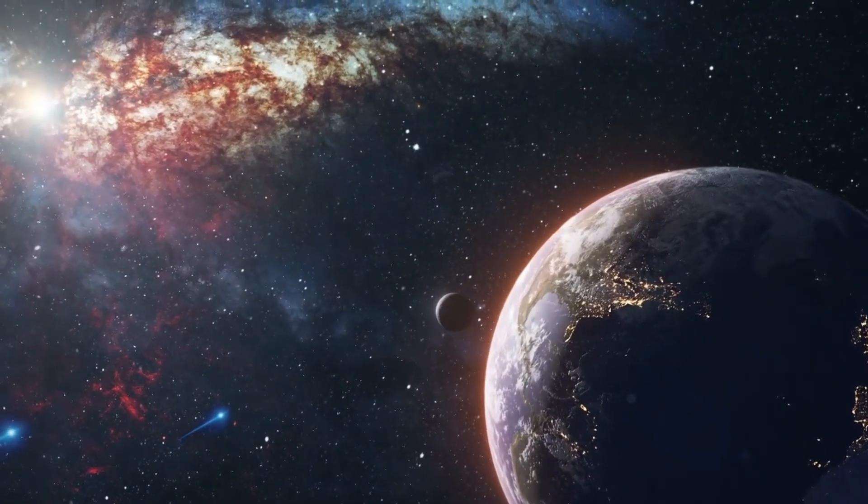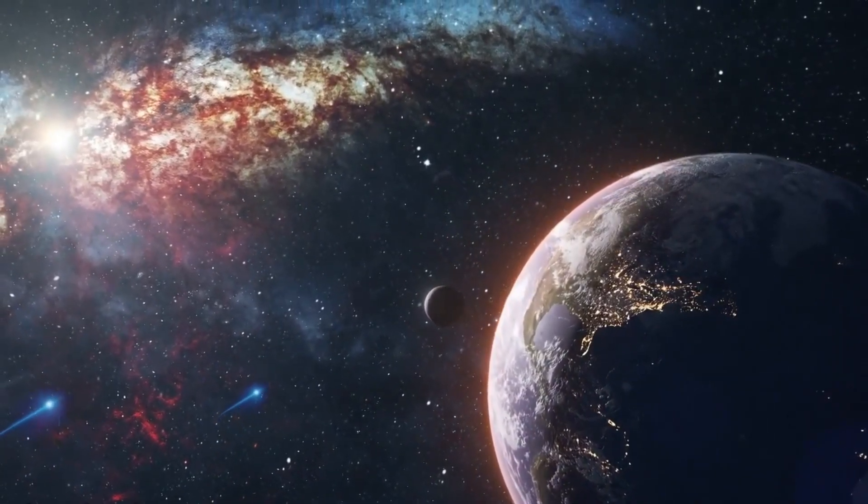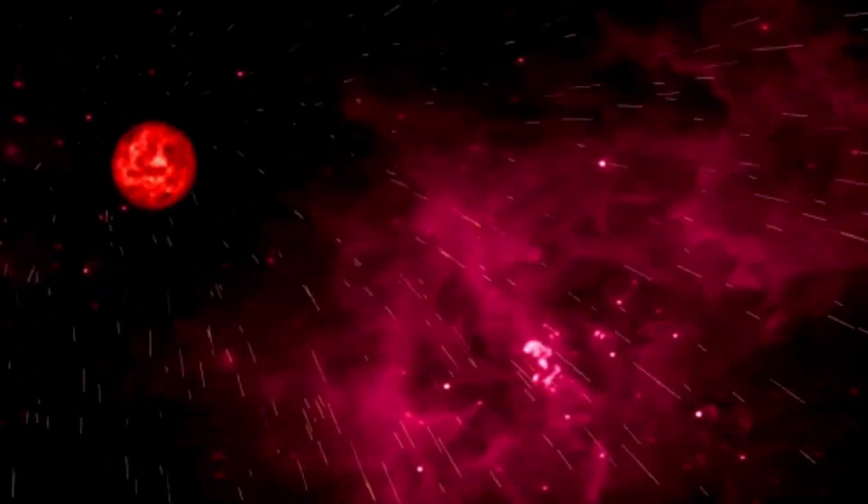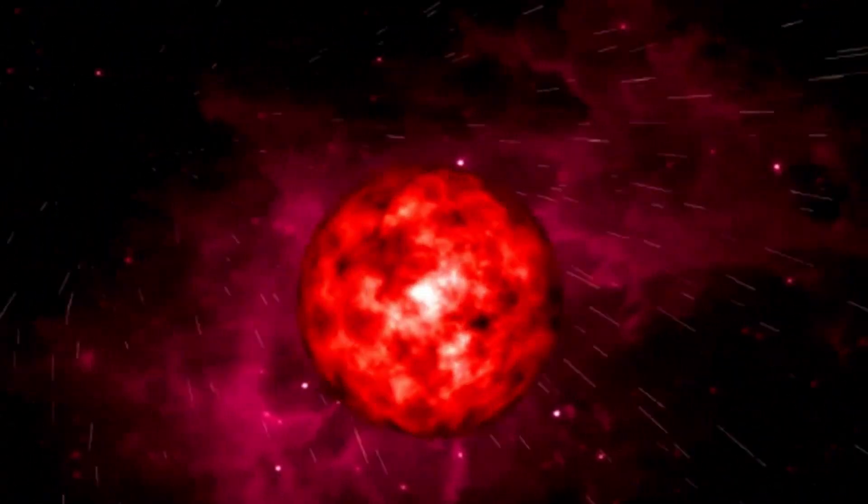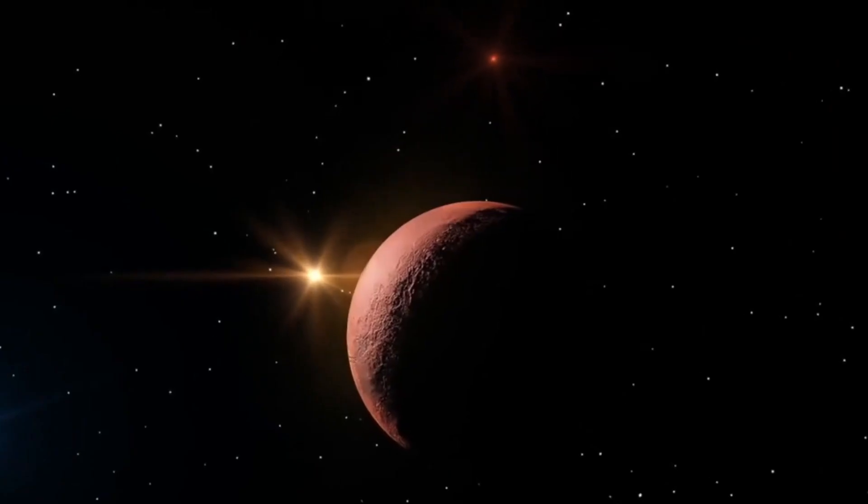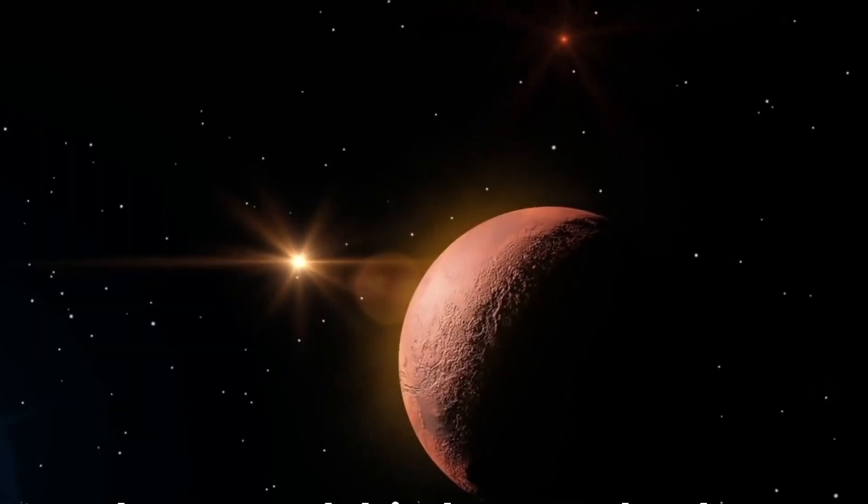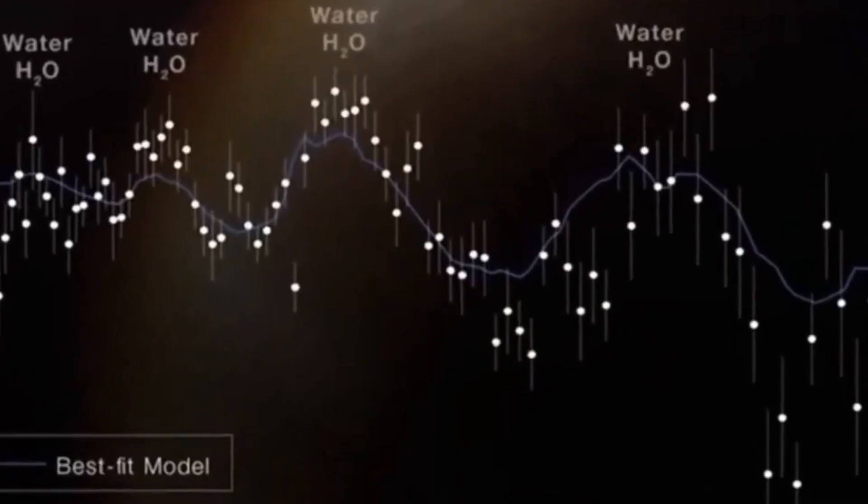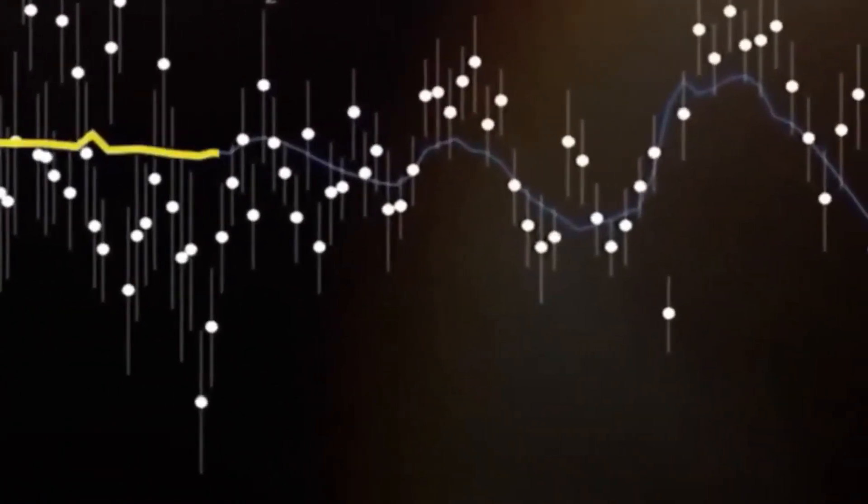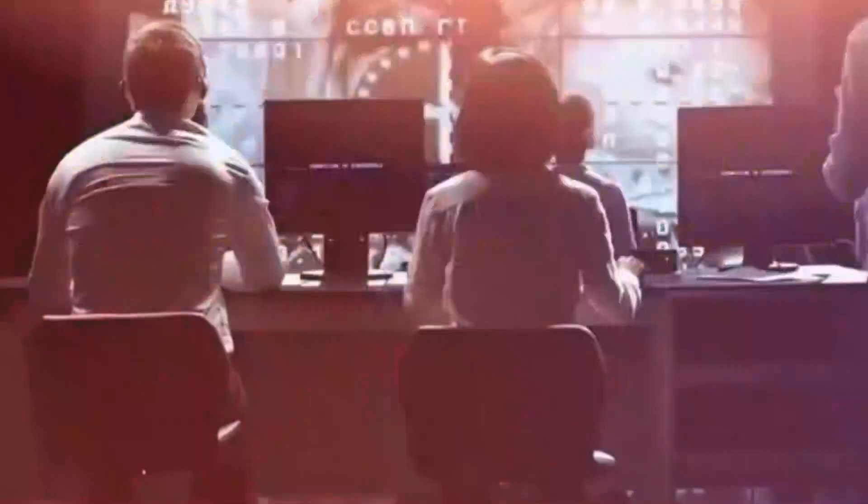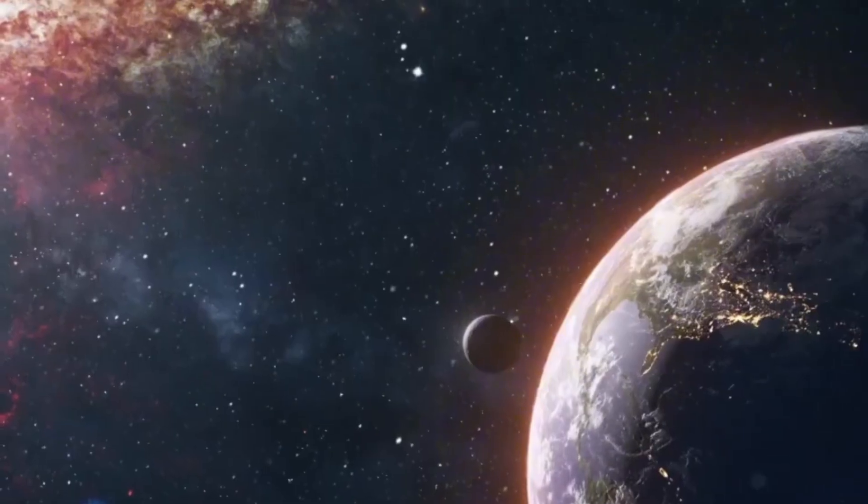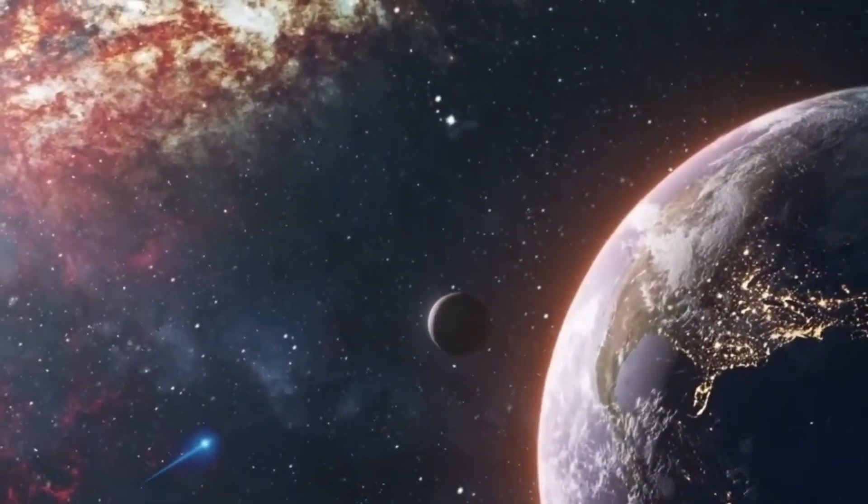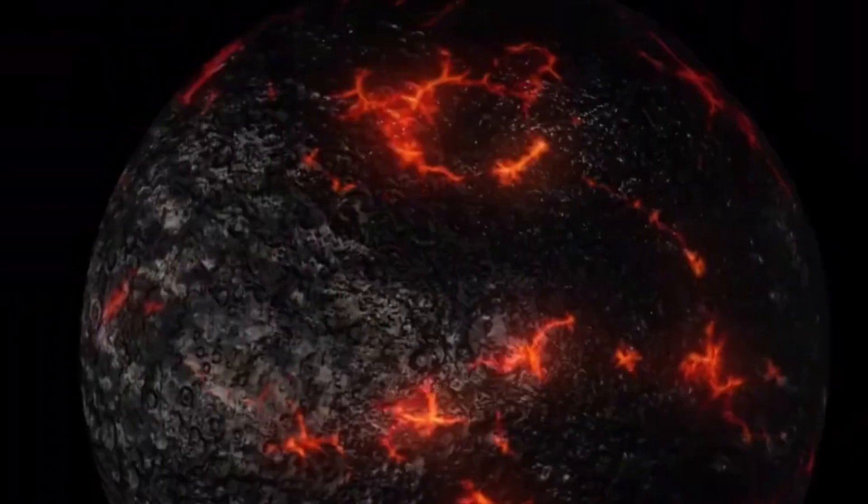Proxima Centauri is a red dwarf star located just over four light-years away from Earth and is known for its frequent and intense flares of radiation. These powerful bursts of stellar energy have the potential to significantly impact the conditions on any planet orbiting the star. The radiation emitted during these flares could have a detrimental effect on the atmosphere and surface of Proxima Centauri B, potentially stripping away the protective layer of gases that allow life to thrive. The intense radiation from Proxima Centauri flares could also pose a significant threat to any potential life forms that may exist on the planet. Exposing organisms to harmful levels of radiation could hinder their ability to survive and reproduce, making it challenging for complex life to evolve on Proxima Centauri b.